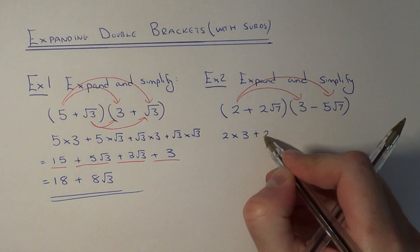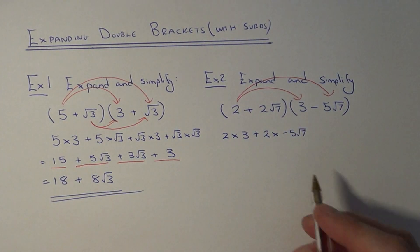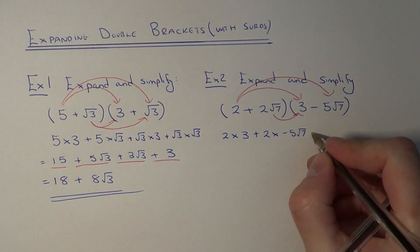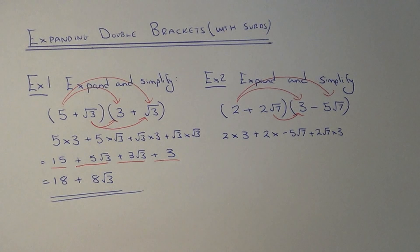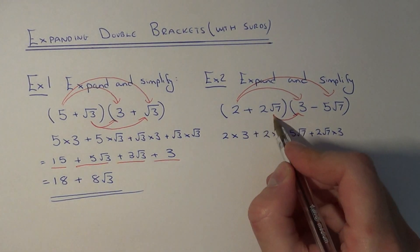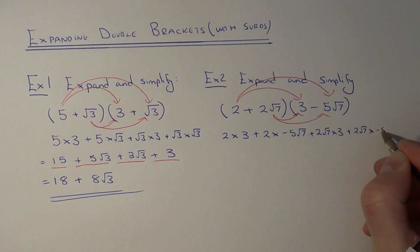Our outer terms, we've got 2 times minus 5 root 7. Multiply our inner terms, we've got 2 root 7 times 3. And our last terms, we've got 2 root 7 times minus 5 root 7.